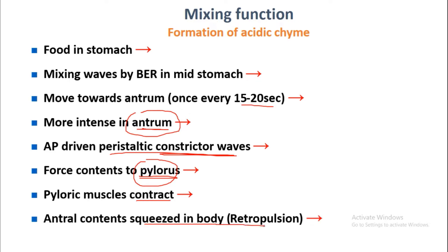There is a strong contraction of the antrum, pushing the food present in the antrum towards the pylorus. However, the pyloric sphincter is contracted and closed, so the food cannot enter the duodenum. The food touches the pyloric sphincter and reverts back towards the antrum and body of the stomach. This is known as retropulsion.